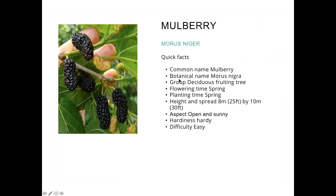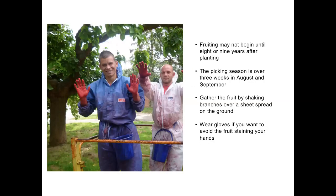So, why I picked Mulberry. Some quick facts from the RHS — I'm a librarian so I'll tell you my sources. It seems like quite an easy tree to grow, particularly the black mulberry, which grows quite well in the UK. It's quite slow to grow and it likes open and sunny aspects, so the one we've got in the garden should be in exactly the right position.